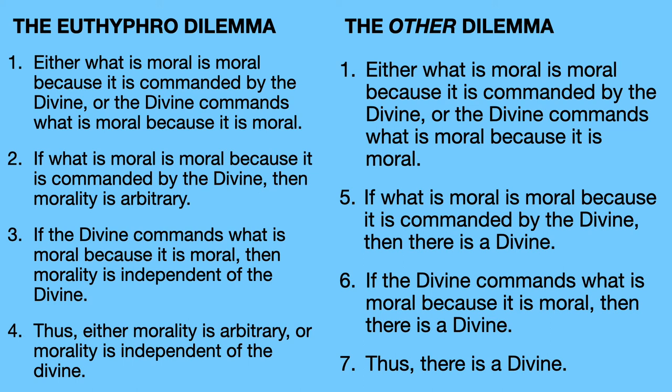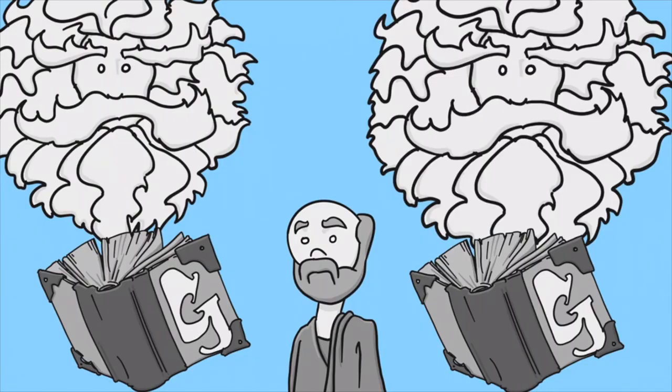Atheism claims that there is no rational justification for the existence of the divine, and agnosticism claims there's no rational justification whether there is a divinity or not. In contrast, this argument concludes that there is one. Okay, so nobody is really pleased with the consequences of the Euthyphro dilemma.